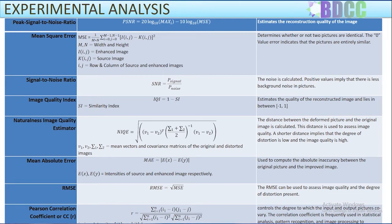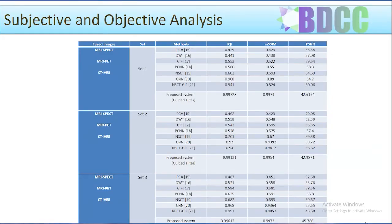The distance between the fused image and the original image is calculated; a shorter distance implies that the degree of distortion is low and the image quality is high. Mean absolute error (MAE) is used to compute the absolute inaccuracy between the original picture and the improved image. RMSE can be used to assess the image quality and the degree of distortion present. The Pearson correlation coefficient (CC) controls the degree to which the input and output pictures are correlated.